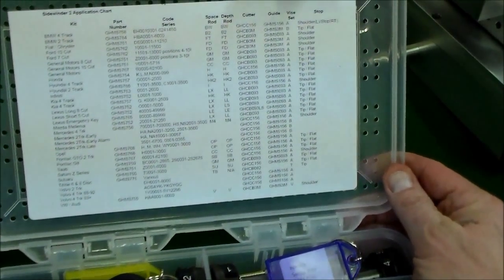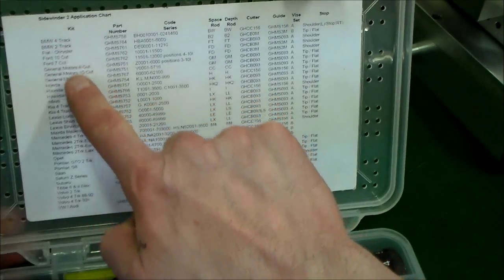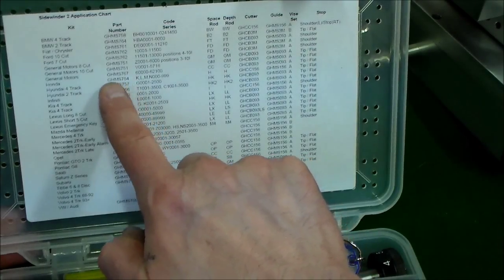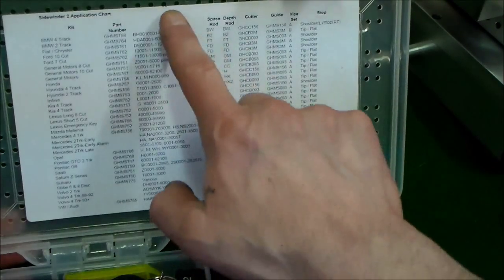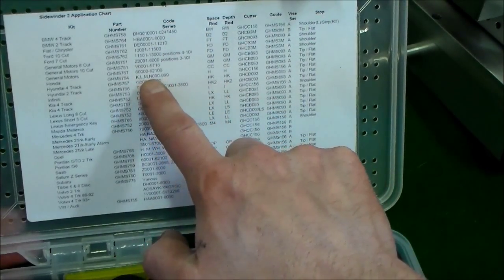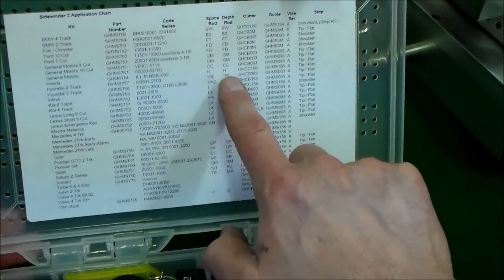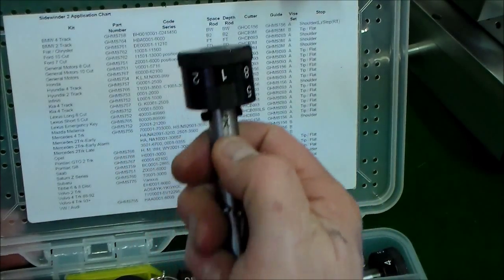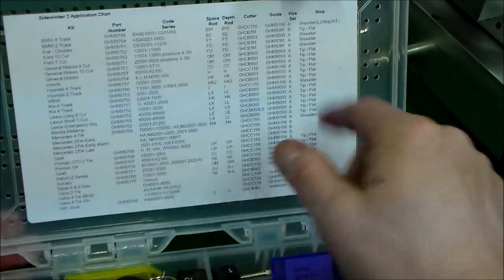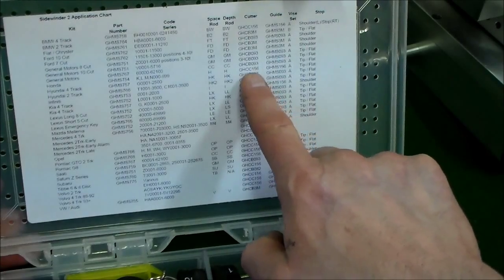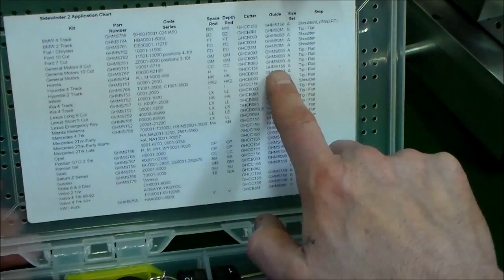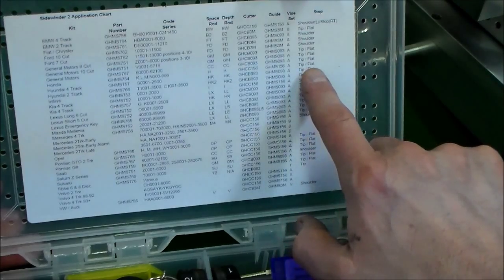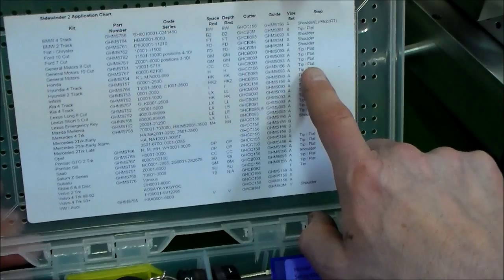On the inside of the kit, you're going to find an application chart. And so the application chart is going to tell you what kit name we have here. For instance, we'll just look at the Honda kit. It's going to give you a part number. So if you were to look in our price list, the GHMS 754 is the part number for that Honda kit. It'll show you here what code series that covers, which is the KLM N000-99. It tells you what the space rod and the depth rod have marked on them. And again, those markings are right at the throat, just below the black knob. Cutter over here would be a GHCC 156. Guide would be a GHMS 156. Going to use the A set of vices. And we're going to tip stop the key and use the handheld tip stop to line that up flat with the end of the vise.